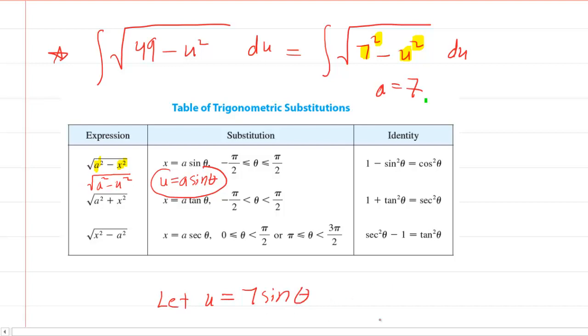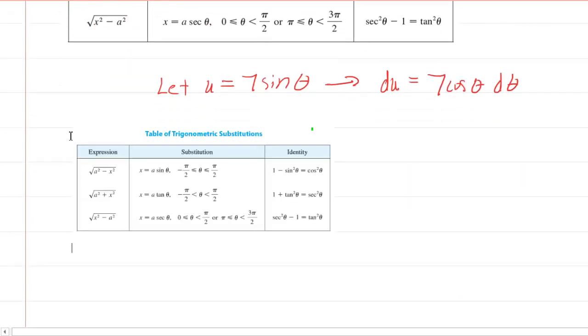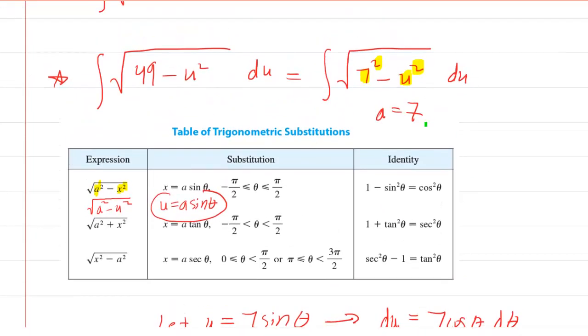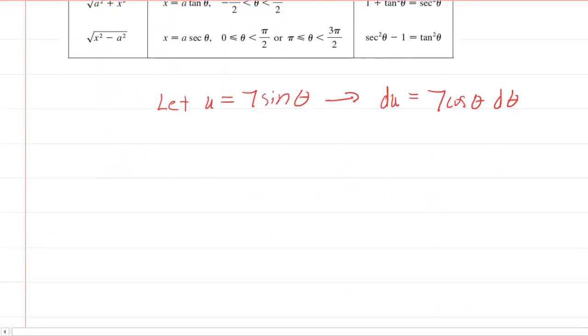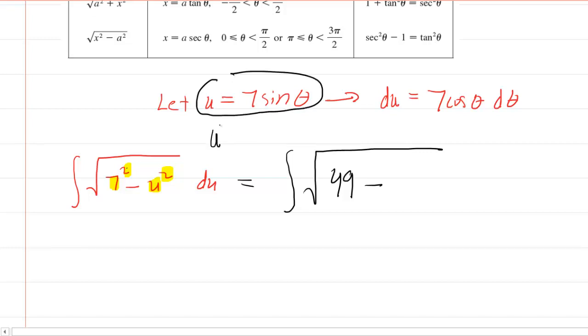In this procedure, we also have to differentiate. We get du equals 7 cosine theta d theta. Now, let's take our expression and make some trigonometric substitutions. We have the square root of 49 minus u squared. Well, u is 7 sine theta. That means u squared is 49 sine squared theta because we're squaring the 7 and squaring the sine. So we have minus 49 sine squared theta times du, but du was 7 cosine theta d theta.